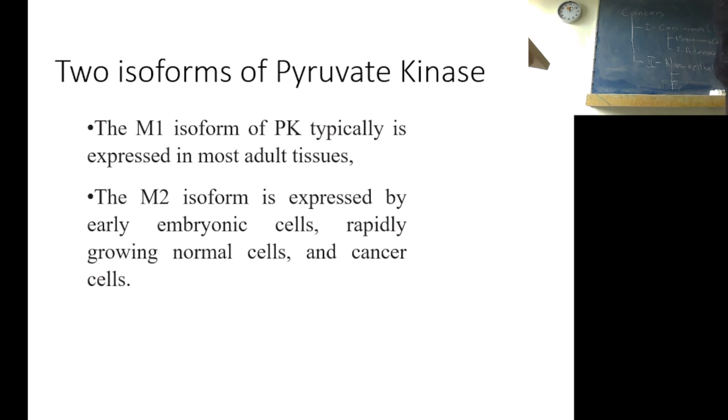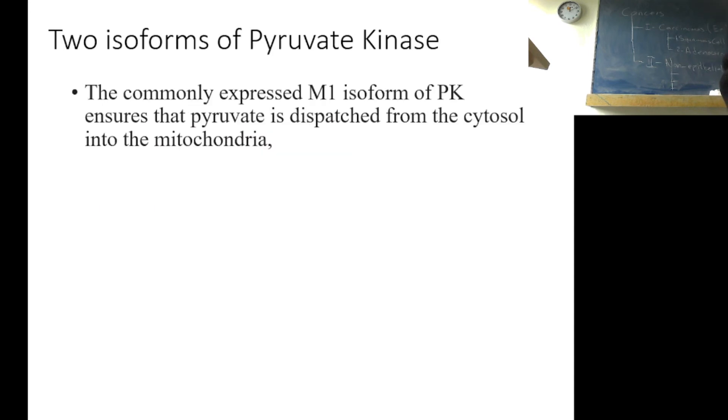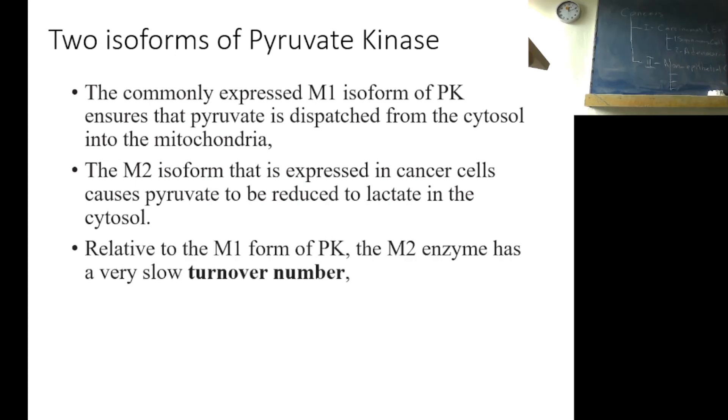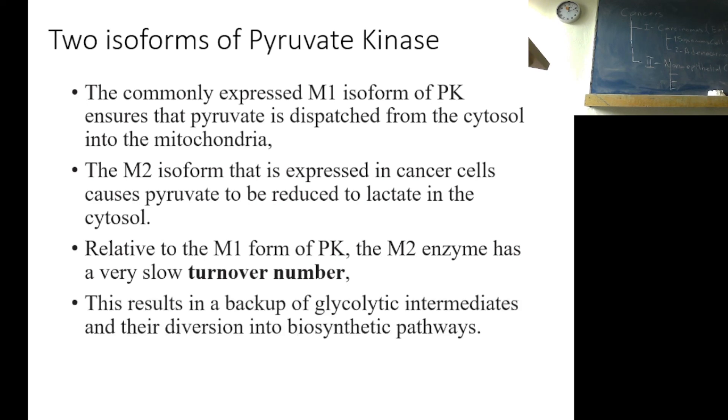The commonly expressed M1 isoform of PK ensures that pyruvate is dispatched from the cytosol into mitochondria. M2 isoform that is expressed in cancer cells causes pyruvate to be reduced to lactate in the cytosol. Relative to M1 form, the M2 enzyme has very slow turnover number. This results in a backup of glycolytic intermediates and their diversion into biosynthetic pathways.